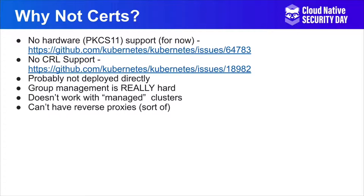Group management is really, really hard. You can do groups in a certificate — you can do it as an OU in the subject of the cert — but there are two problems. One, you can't revoke the cert, so if your groups change, the cert can't be revoked. Two, you don't want to manage it all with RBAC. If you have five or ten developers, listing each one in a role binding is probably not that big of a deal. But if you have 50, 100, or 1,000 developers in a large enterprise, it's going to get messy really, really fast. You want to be able to do groups.